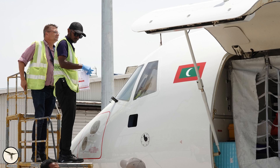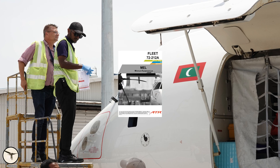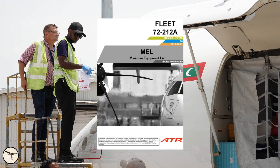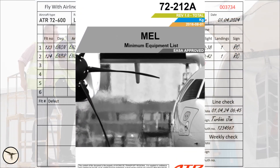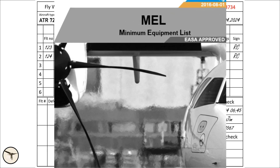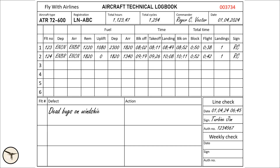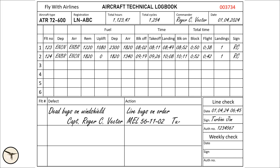However, if the issue cannot be resolved — for example, missing spare parts — the engineer will open a minimum equipment list and check whether the aircraft can be released for service with this defect. If not, the aircraft will remain grounded until it is repaired.